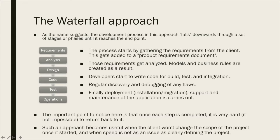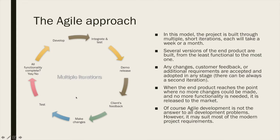Such an approach is not as popular as the agile approach, which we are going to study next. The world now is moving at a very fast pace, requirements are changing all the time, and the development team must be able to adapt to new changes the moment they happen and quickly integrate them into the current product. That is where the agile approach comes into play and excels. In this model, the project is built through multiple short iterations, each taking a week or a month — a minimum of one week, maybe two weeks, and a maximum of four weeks per iteration.